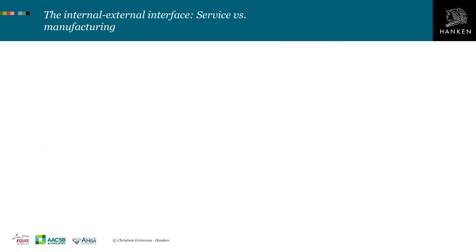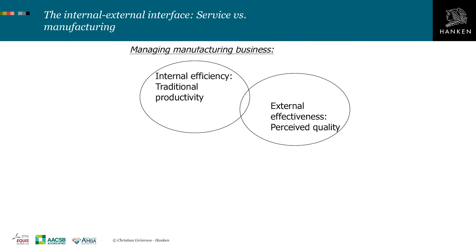If you look at the background or context of manufacturers versus service firms, we see clear differences. Managing manufacturing businesses means that internal efficiency — productivity — and external effectiveness — perceived quality — have very few interfaces. From this it follows that the internal can be managed separately from the external.